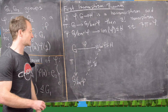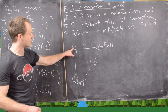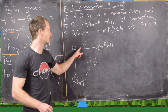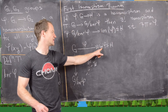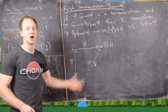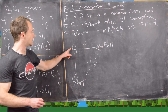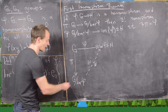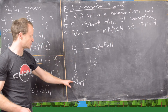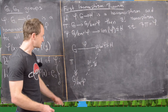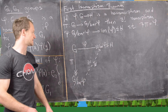A picture gives us an idea for how to do the proof. We have our original homomorphism going from G to the image of phi — a surjection onto that subgroup of H. Then G maps down via the normal projection homomorphism to the quotient, and finally the isomorphism psi is what this theorem brings into existence.